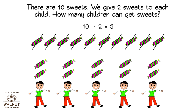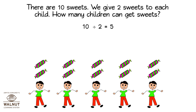So five children can get the sweets. We shared ten sweets with five children by giving each child two sweets. That means we can share equally by subtracting again and again. There were ten sweets. Each child was given two sweets. Five children got sweets.